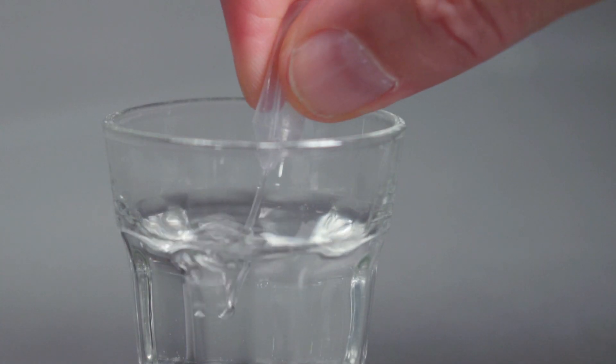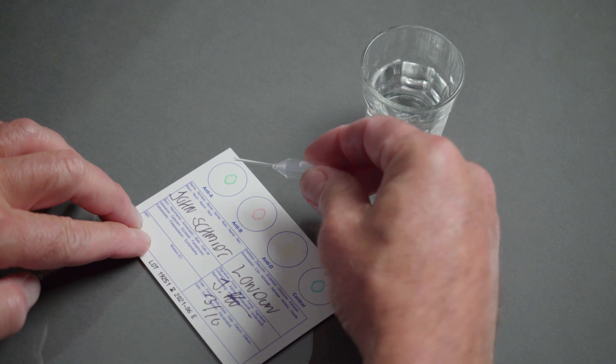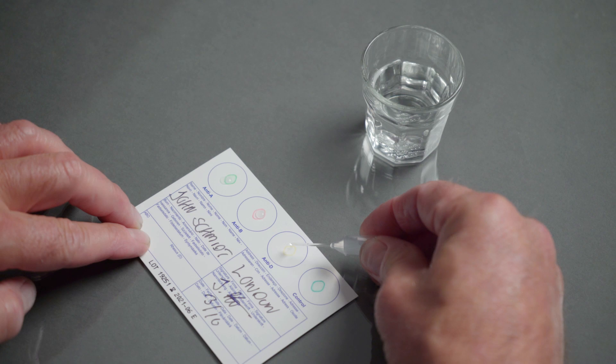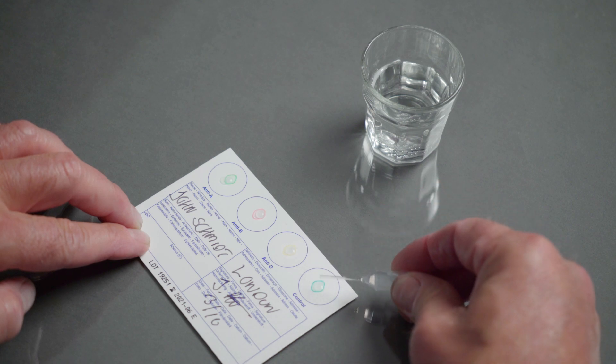Apply one drop of water directly upon the coloured reagent spots of each circle. Don't touch the coloured reagents with the pipette. Take care to avoid any mixing between circles.